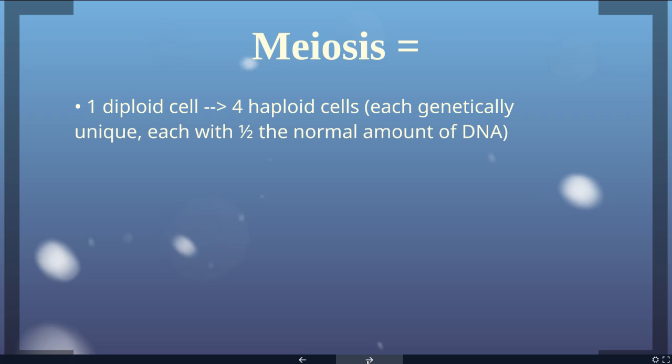In meiosis we're going to take 1 diploid cell — 1 regular everyday 2n cell — and create 4 haploid cells from it. Each of those haploid cells is going to be genetically unique and each is going to have half the normal amount of DNA.